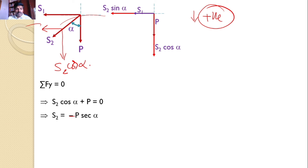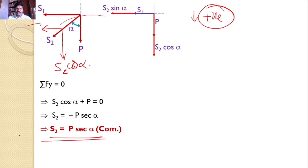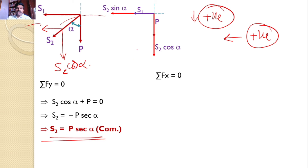Writing the equation: S2 cos α + P = 0, so S2 = −P / cos α = −P sec α. Getting a negative value means the initial assumed tensile direction for S2 is wrong. Hence S2 = P sec α, compressive.